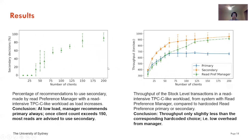Now let's see some results. The first figure on the left shows the percentage of recommendations using secondary made by the Read Preference Manager. When the workload is low — for example, 10, 20, or 30 clients — the Read Preference Manager will always suggest that most read-only transactions go to the primary copy. However, when the load gets larger, for example 150 or 200 clients, the Read Preference Manager would send most reading requests to the secondary copy.